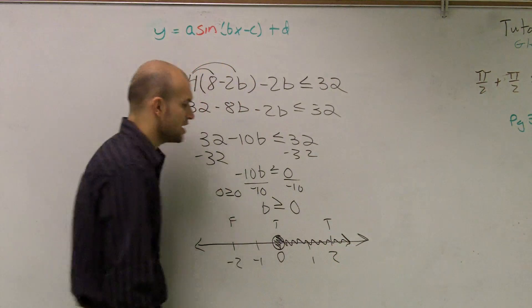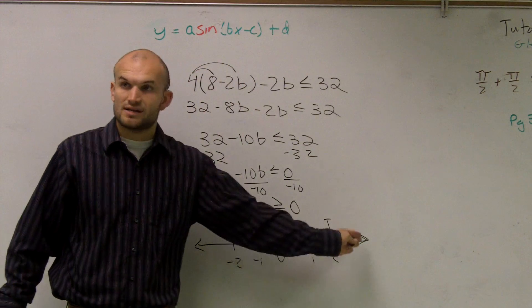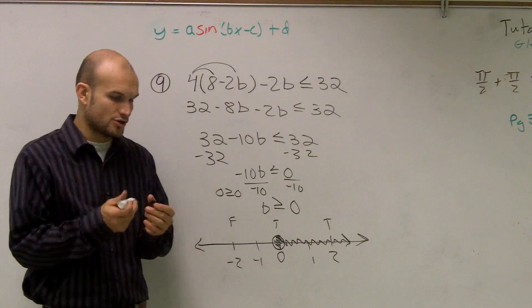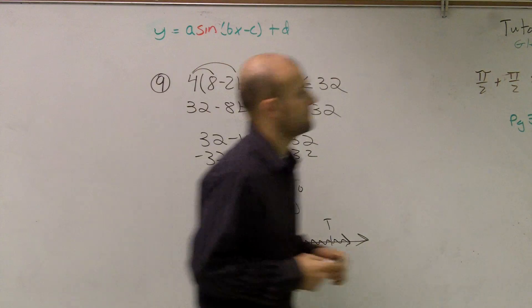Because what that means is all the points that are to the right of zero are going to make your inequality true. That's how you do that.